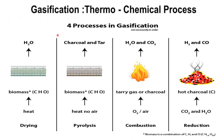Gasification — also a thermochemical process — is the conversion of carbonaceous feedstock into synthetic gas. At high temperatures of about 700°C or above, and in a controlled environment, the raw material is partially converted into gas. Gasification takes place in two stages: in the first step, the raw material is partly combusted to form producer gas and char; in the second phase, carbon dioxide and water are chemically reduced by charcoal, creating carbon monoxide and hydrogen. The producer gas composition is 18–20% hydrogen, an equal portion of carbon monoxide, 2–3% methane, 8–10% carbon dioxide, and residual nitrogen.